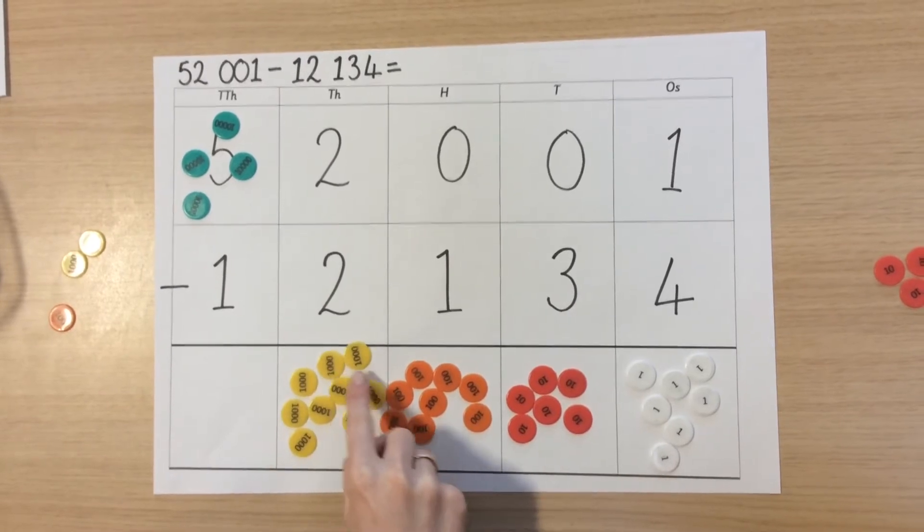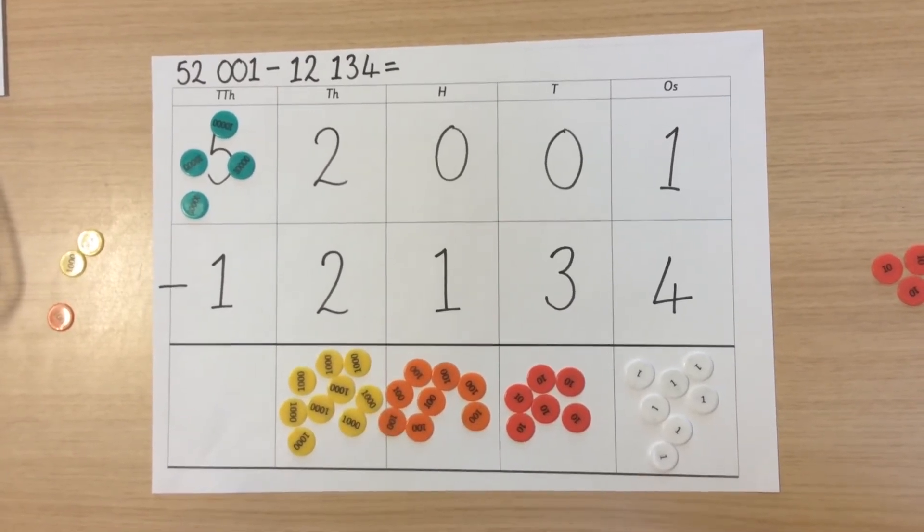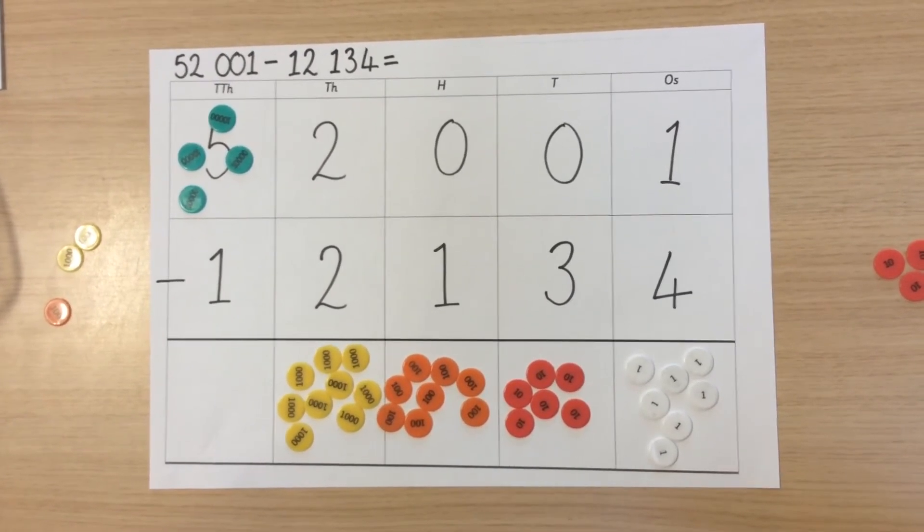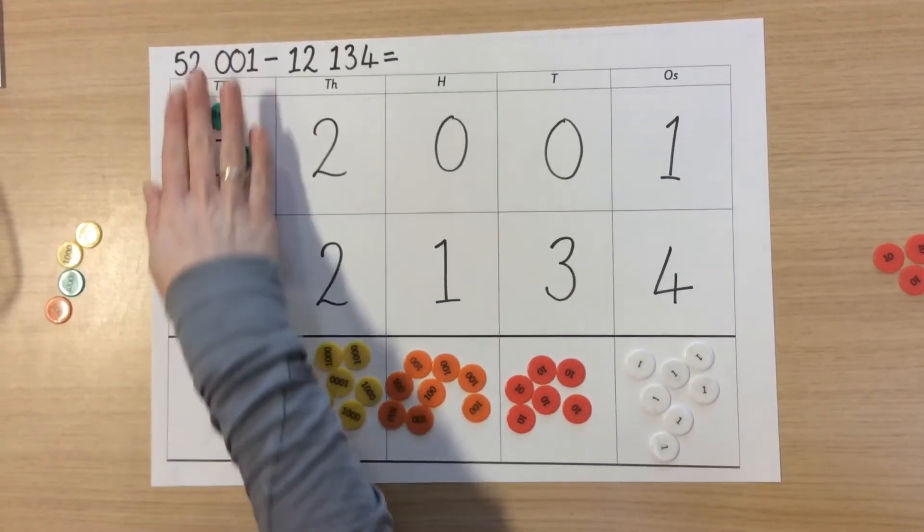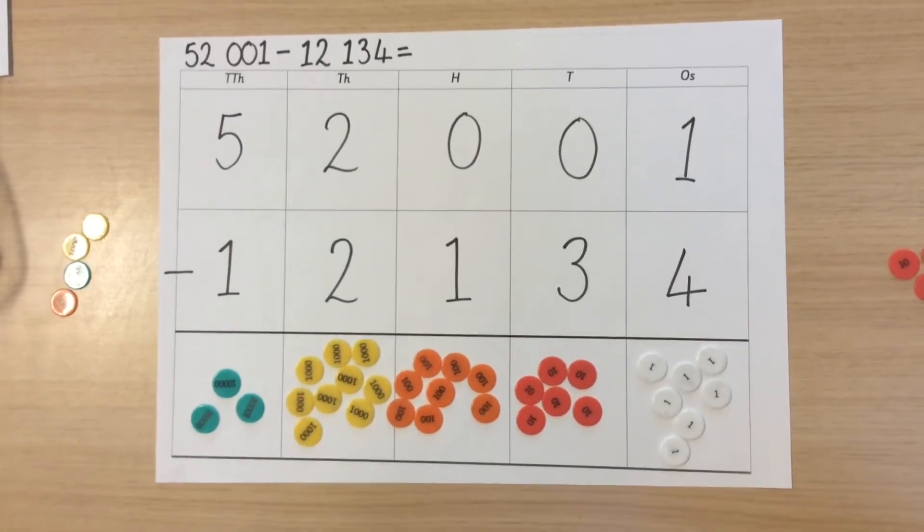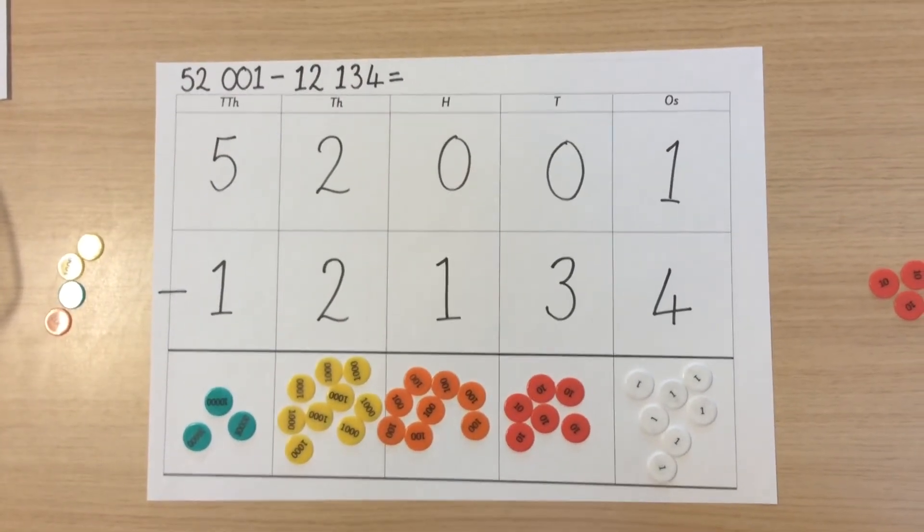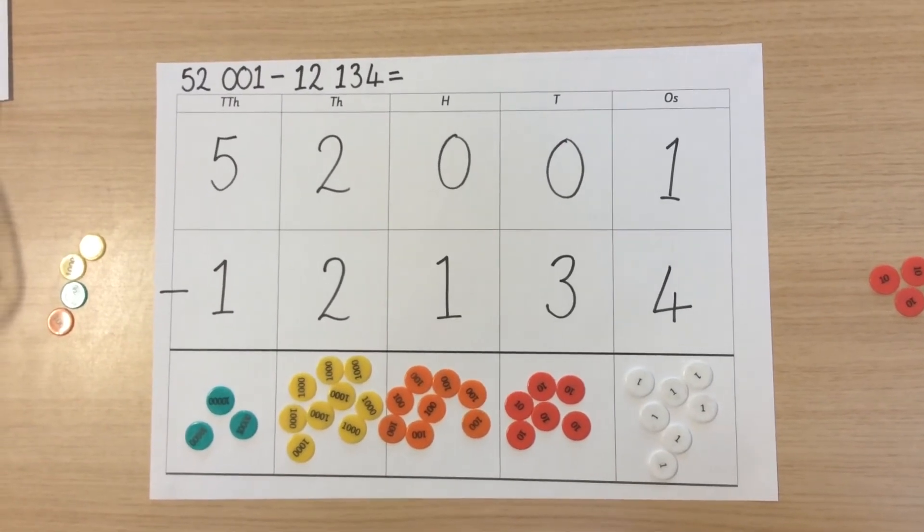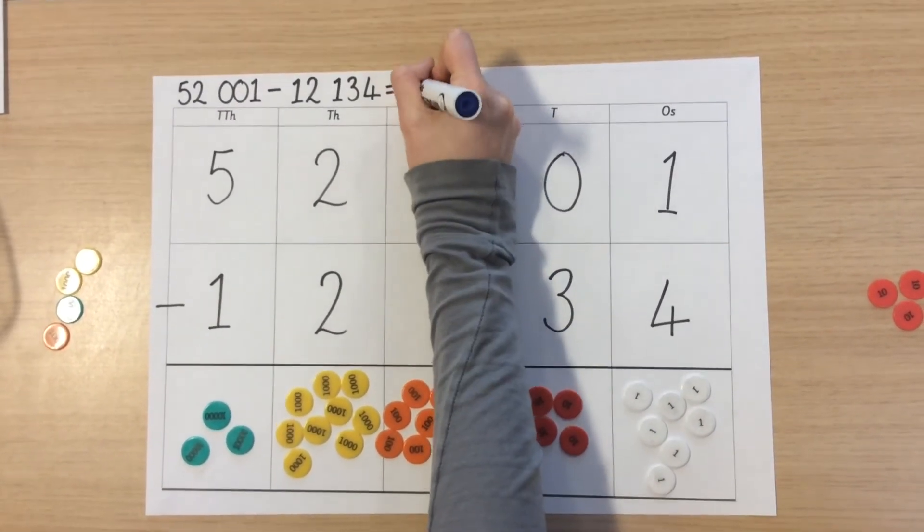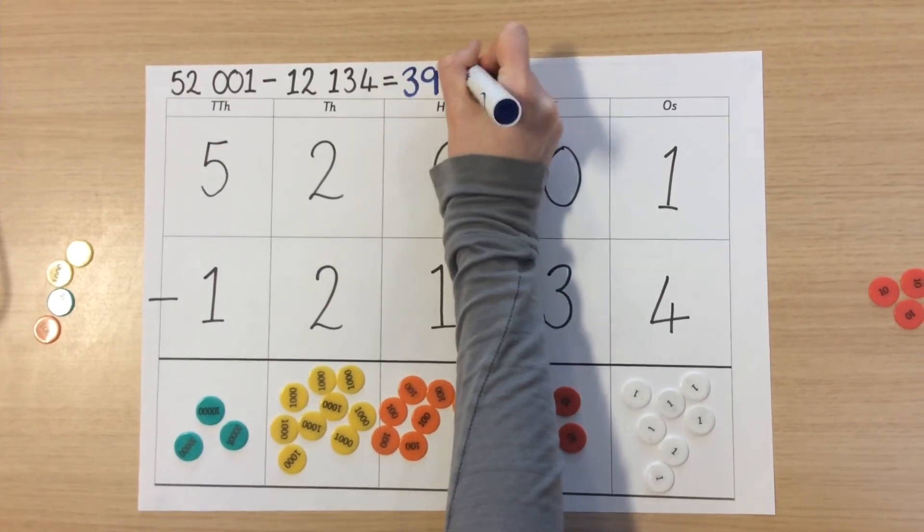Finally in our thousands column we should be left with four ten thousands take away one ten thousand. We bring one to check, we subtract and we bring what is left down to the bottom in our answer box. Our final answer that we should be left with is 39,867 which we write at the top of the page to ensure it is clear.